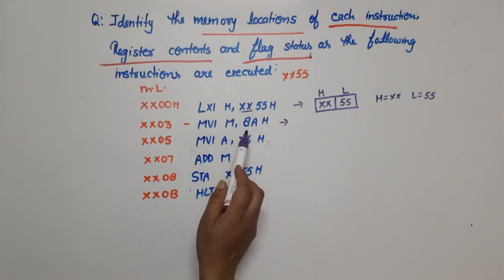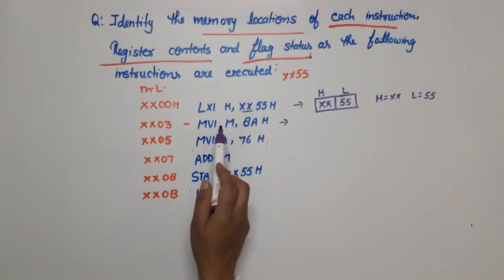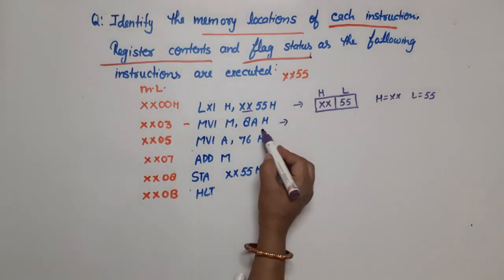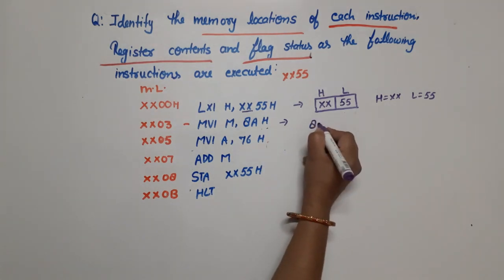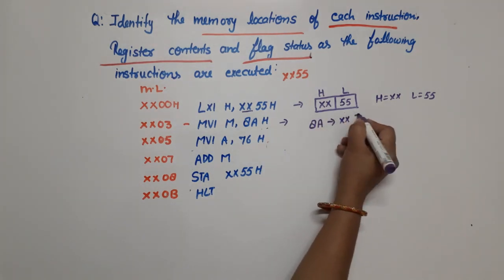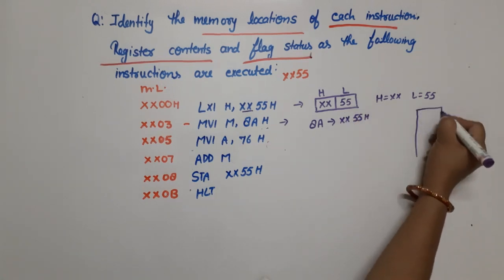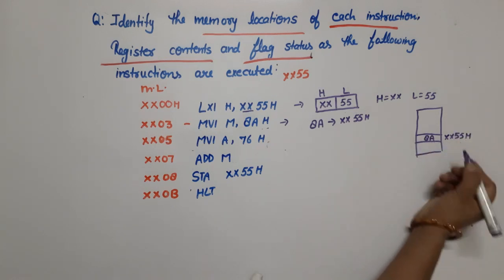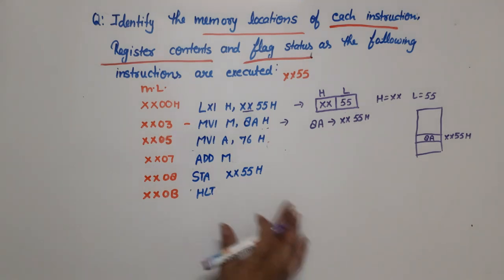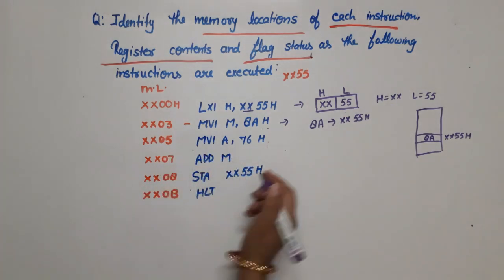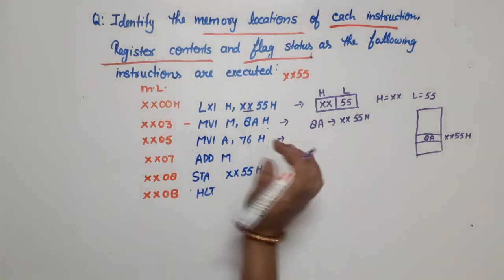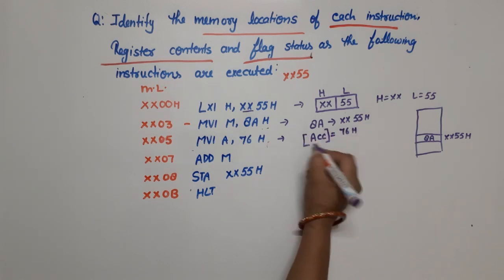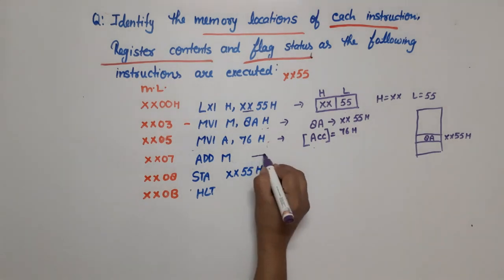MVI M means move immediate data into the memory pointer location. The memory pointer is the HL pair. So as this instruction executes, 8AH will be stored at memory location XX55H. MVI A means move immediate data into the accumulator. As this instruction executes, the accumulator content becomes 76H. Next is ADD M, which adds the content of the memory pointer with the content of the accumulator.